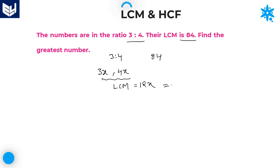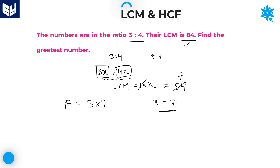12x is equal to the given LCM value of 84. Cancelling with 12, we get x = 7. The first number is 3x = 3 × 7 = 21, and the second number is 4x = 4 × 7 = 28. The question asks for the greatest number among the two, which is 28. So 28 is the right answer for this question.